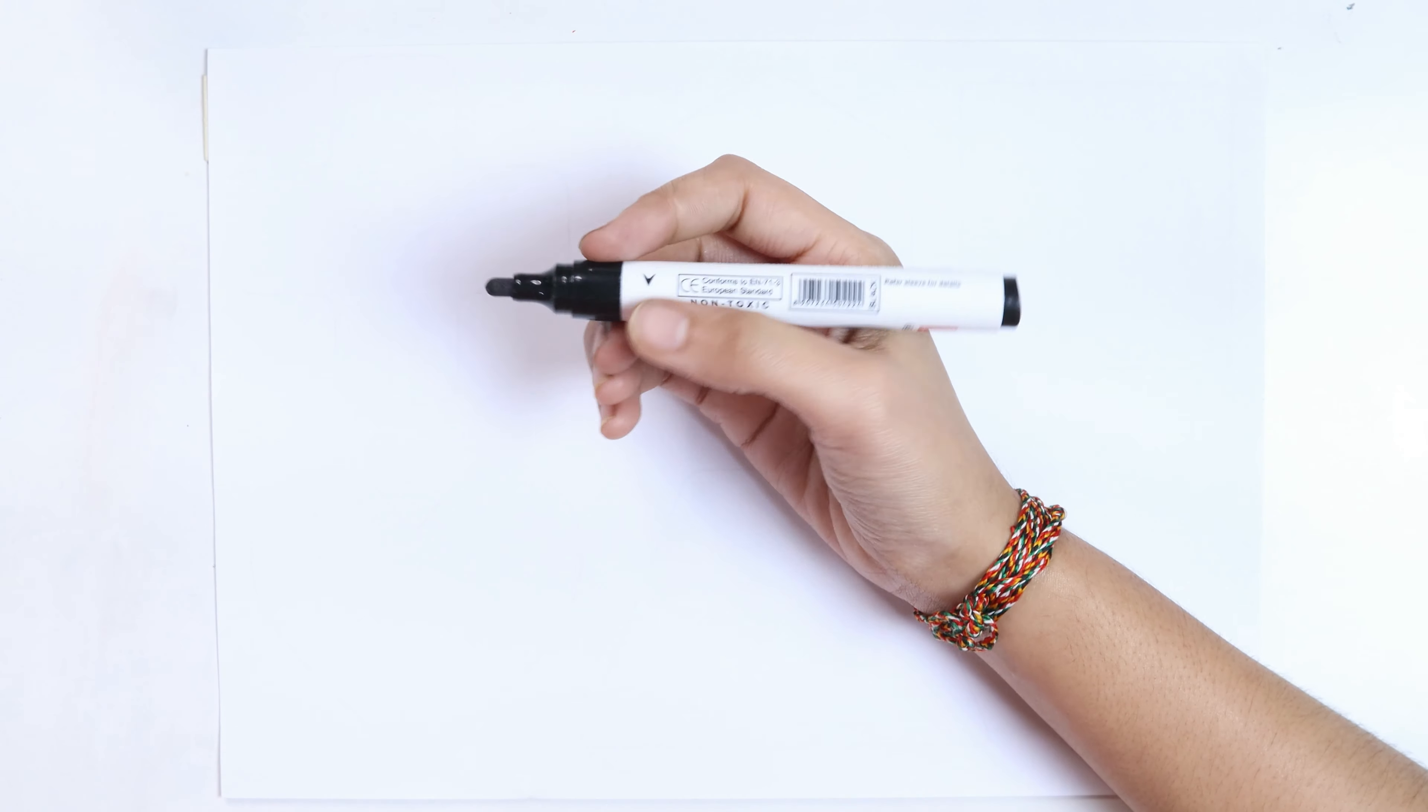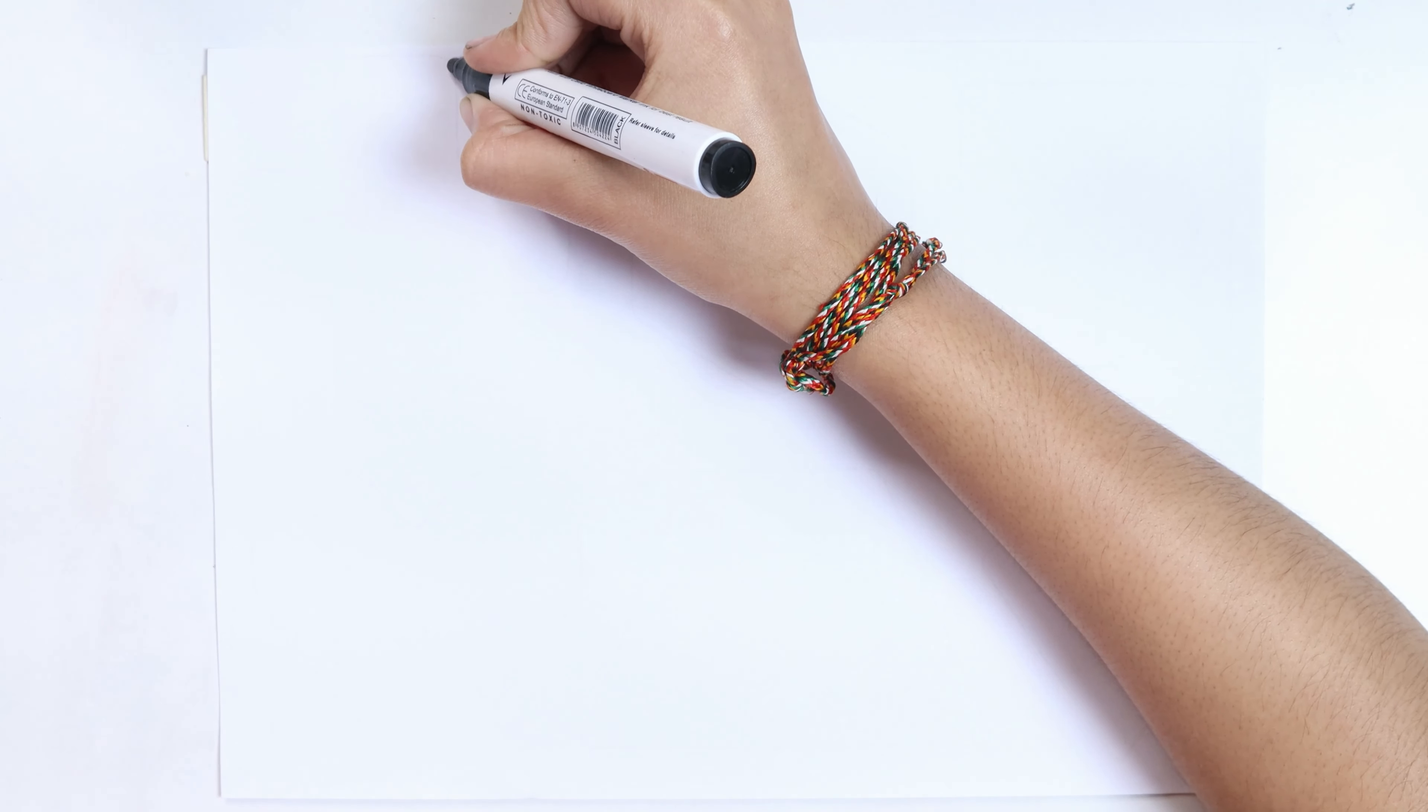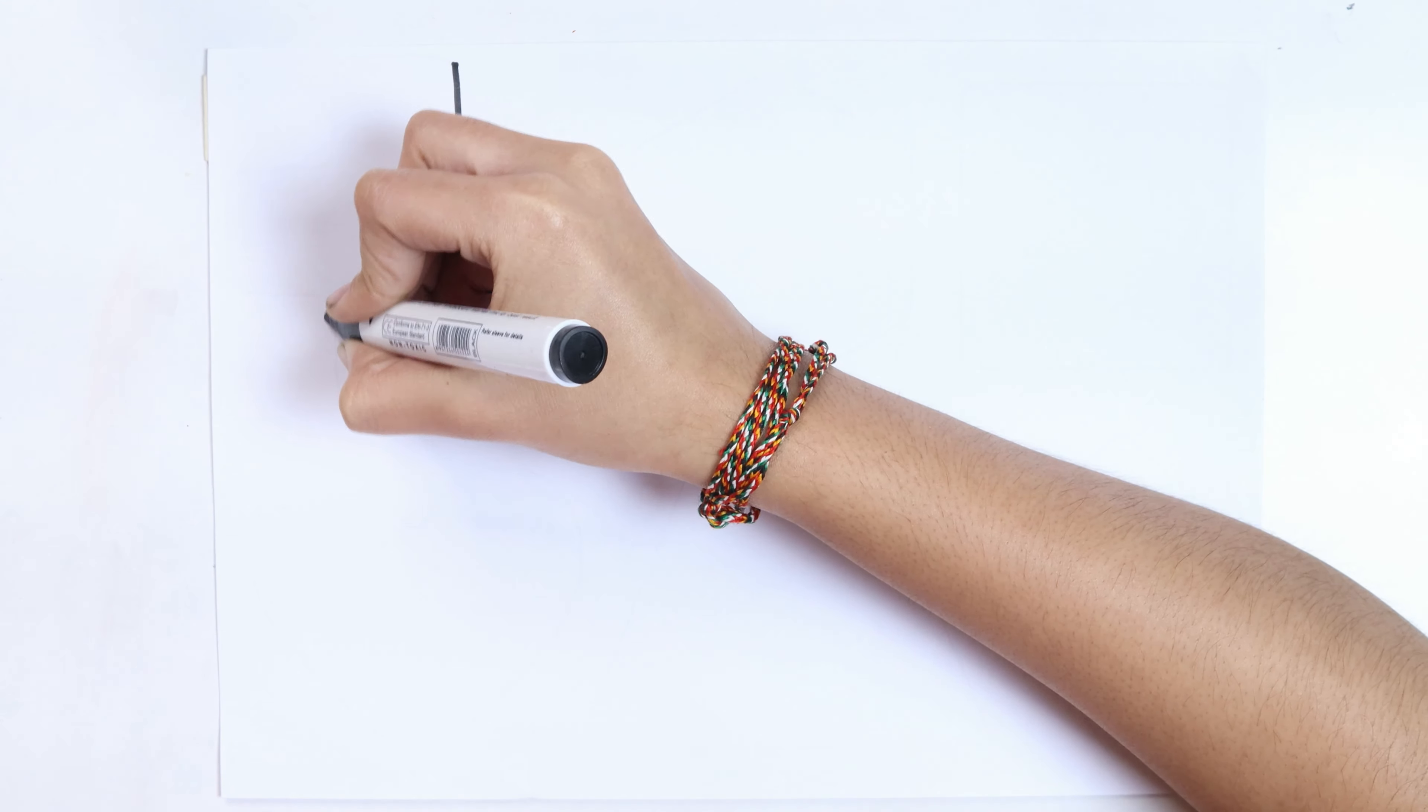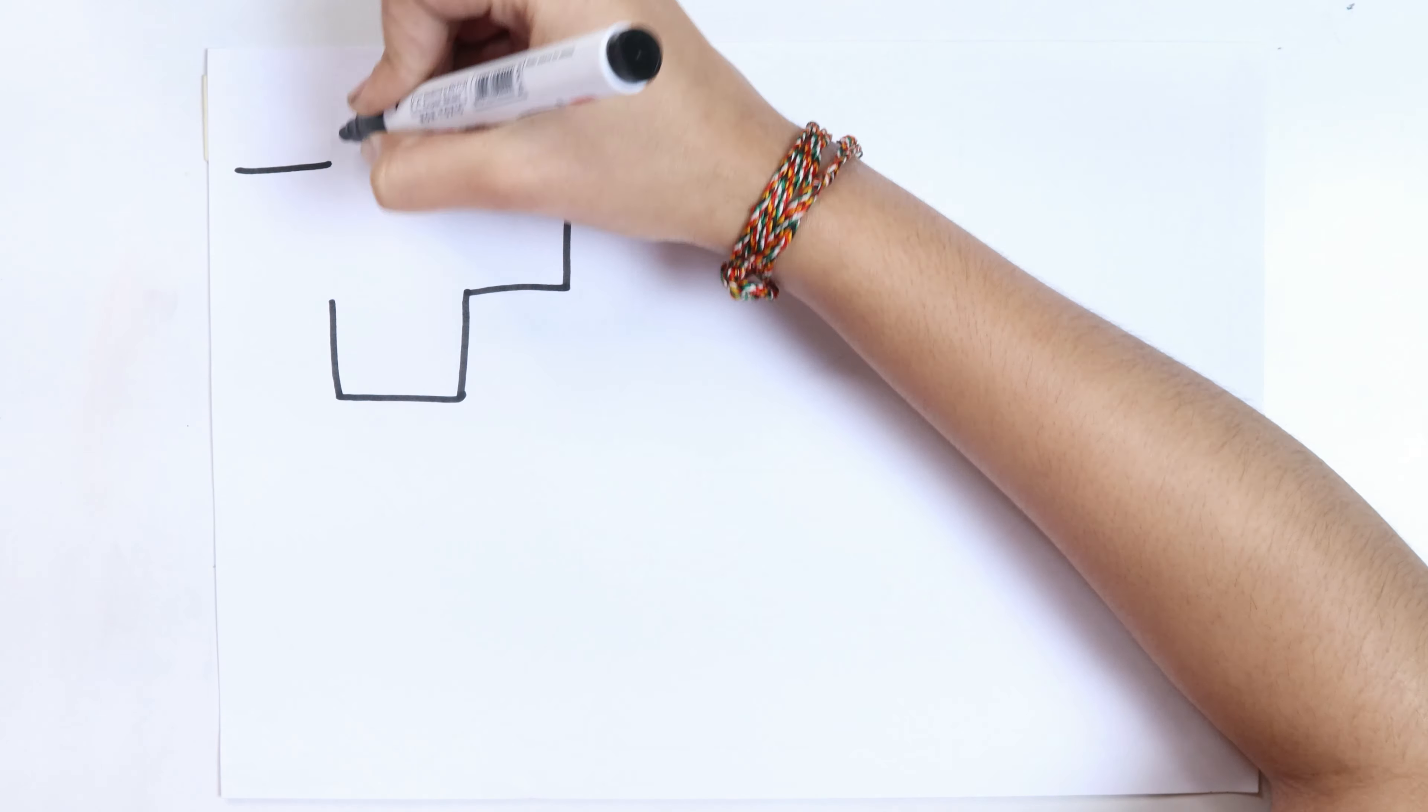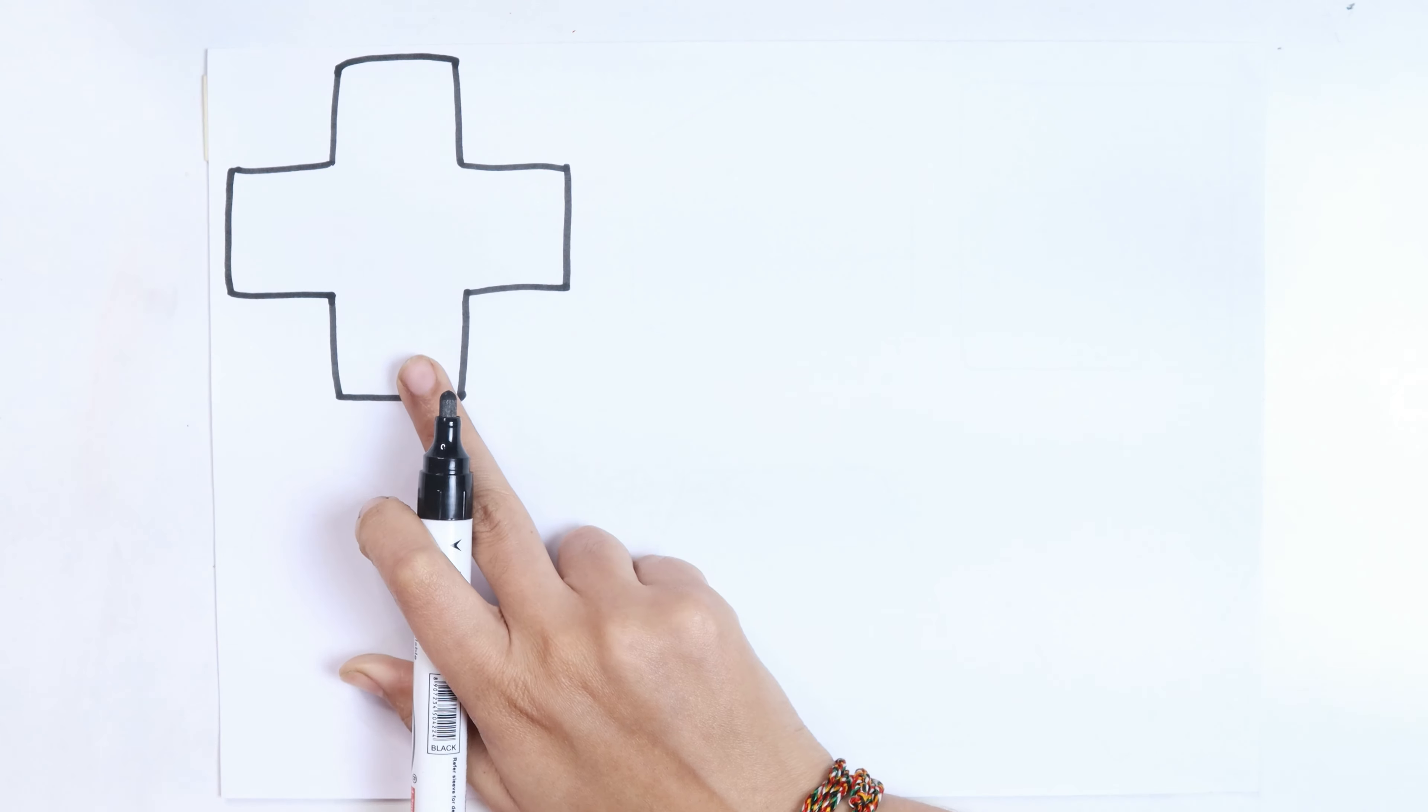Let's learn to draw some 2D shapes. This is the black color. Square.